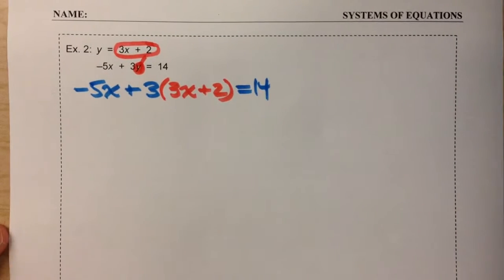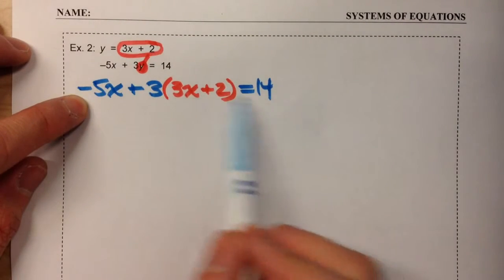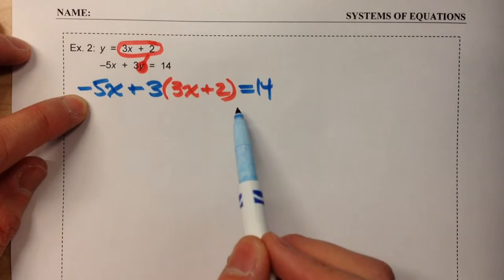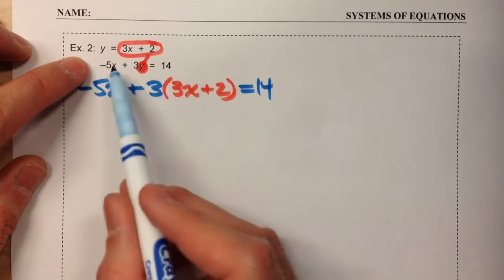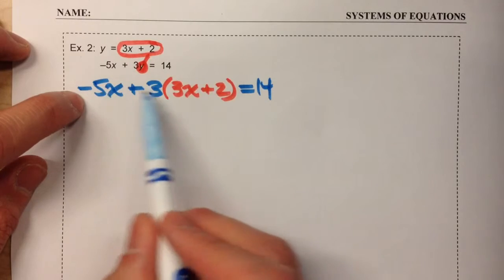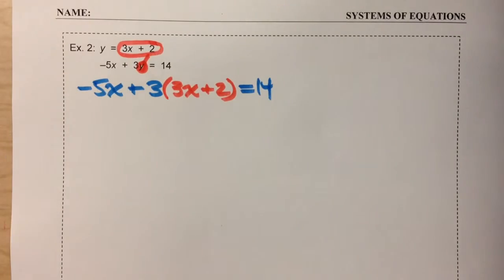So there's our equation. Notice our new equation has just x's in it. Before, we had an x and a y in it, and we can't solve that. We can't solve an equation with two different variables in it. But now that we've got this equation, we can solve this.